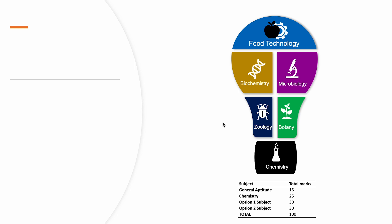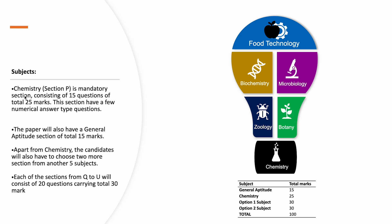The subjects we have are: Section P is the Chemistry section, which is mandatory. It will have 15 questions and the total marks are 25. This section will also have some numerical answer type questions. The paper will also have a General Aptitude section, which is usually a scoring section — do not ignore it. Apart from that, candidates will have to choose two subjects from food technology, biochemistry, zoology, botany, or microbiology. Each of the sections Q to U consists of 20 questions carrying 30 marks total.